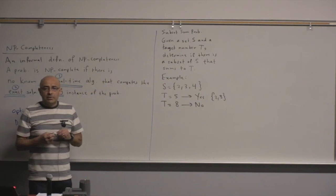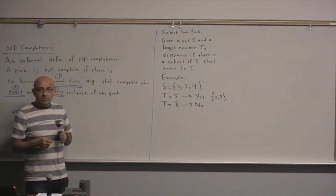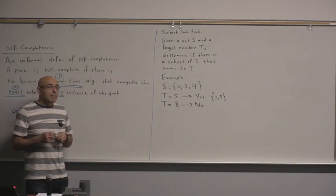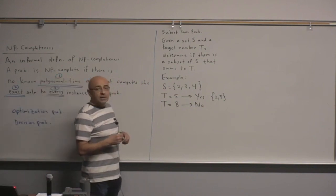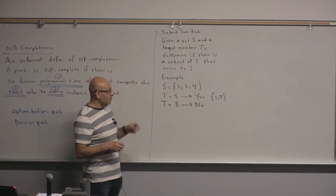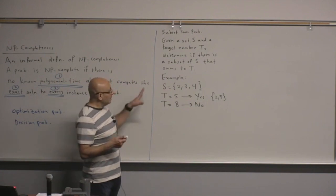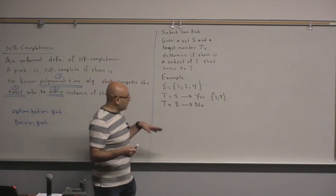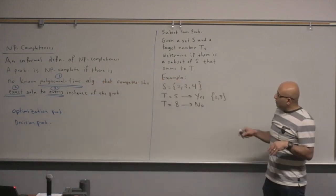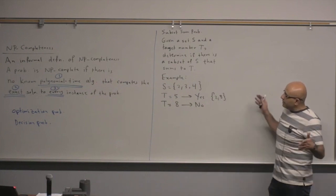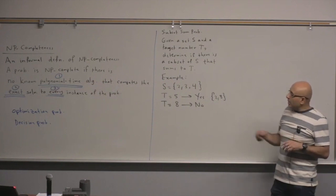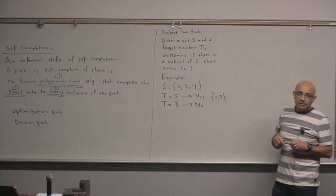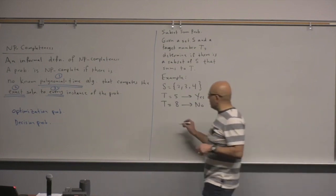This problem looks very innocent and easy, but it doesn't have any general algorithm that runs in polynomial time. Basically, if you want to solve this problem for an arbitrary instance, you would have to do an exponential algorithm. Why exponential? You need to check every combination, and there are 2^n combinations.